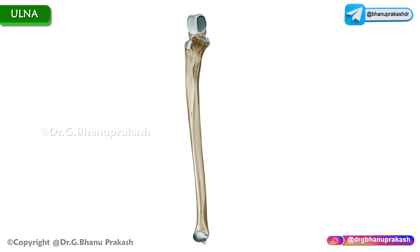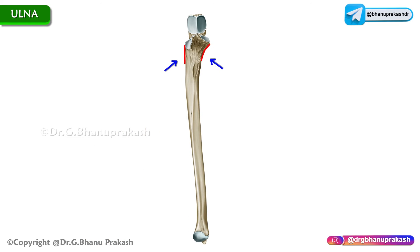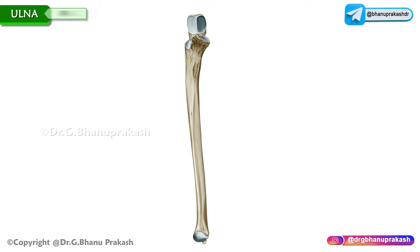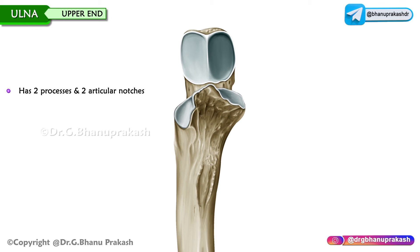The ulna is one of the long bones in the forearm, located medial to the radius. It is more thick in the upper half and becomes narrower in the lower part. It consists of an upper end, shaft, and a lower end. The upper end has two processes and two articular notches.